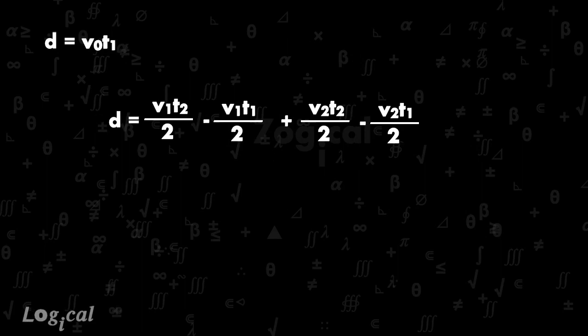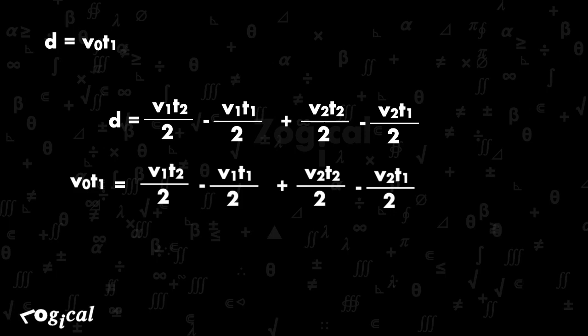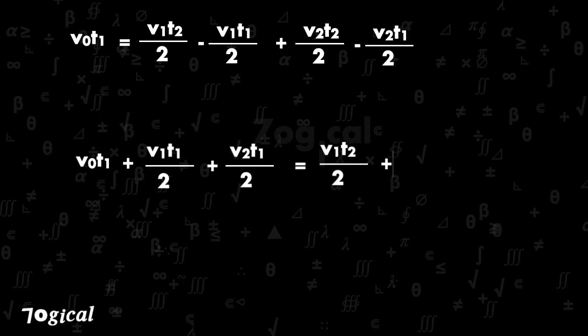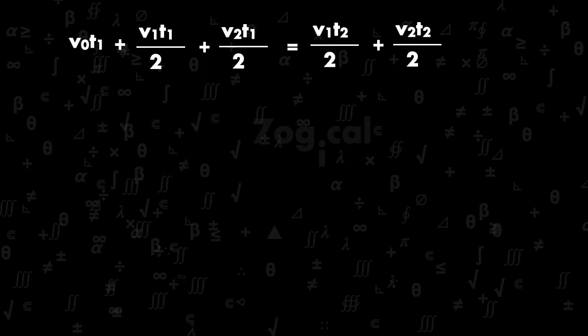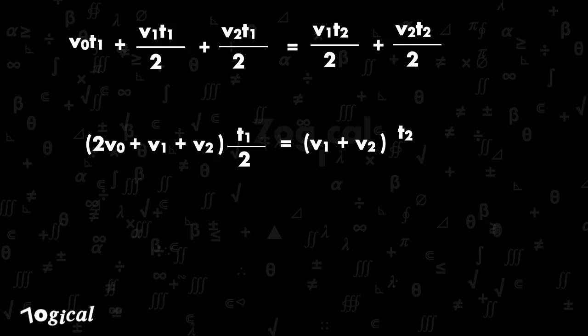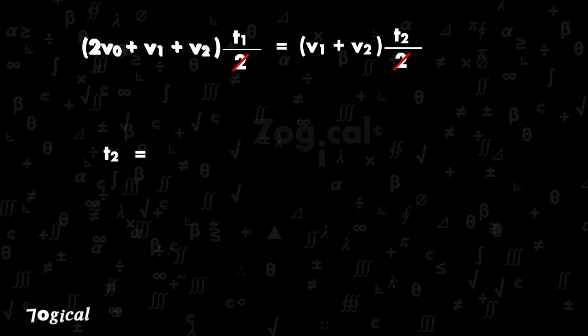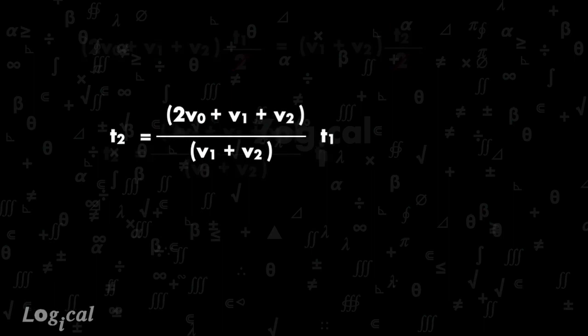Substituting the value of t1 = d / v0 and simplifying, we get: 2v0*t1 + v1*t1/2 + v2*t1/2 is equal to v1*t2/2 + v2*t2/2. This becomes: (2v0 + v1 + v2) * t1 / 2 = (v1 + v2) * t2 / 2.